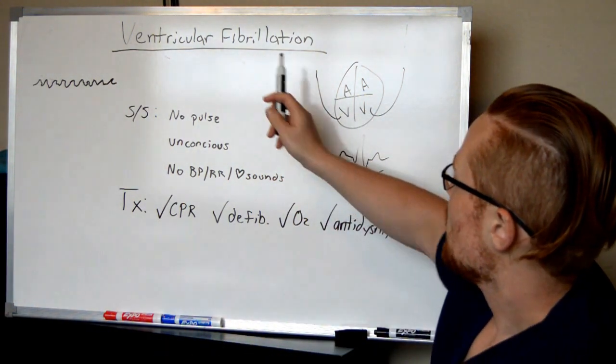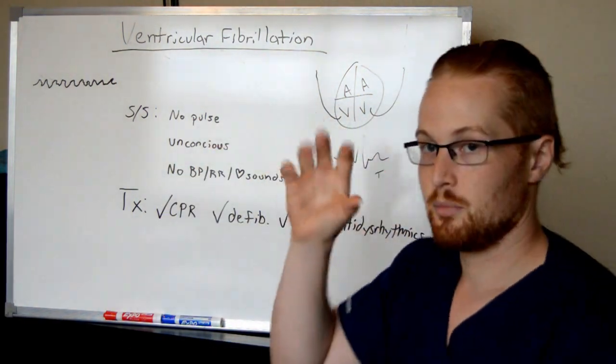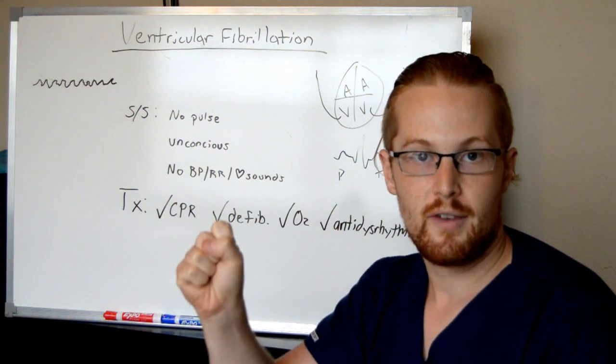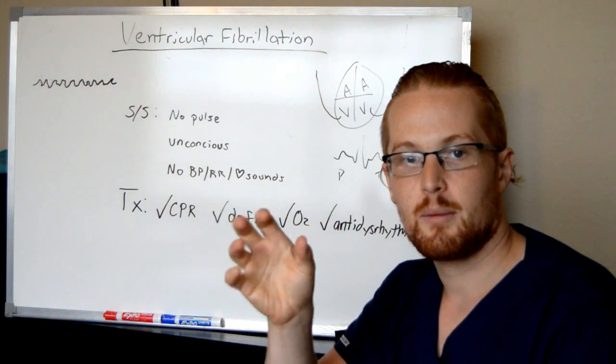Now in V-fib, the ventricle's have gone, so V-tac is the ventricle's very, very fast, not effective because they're not having time to completely relax.